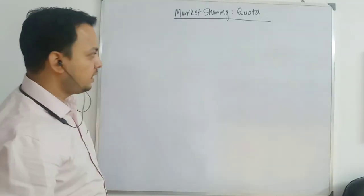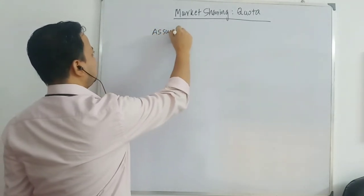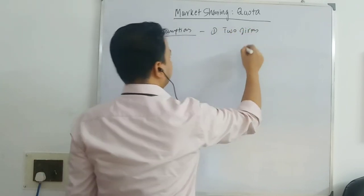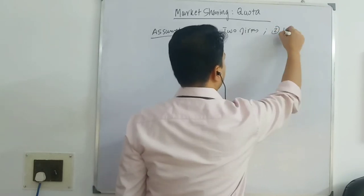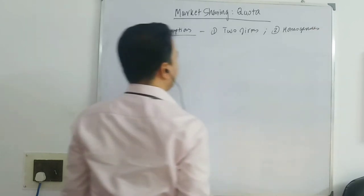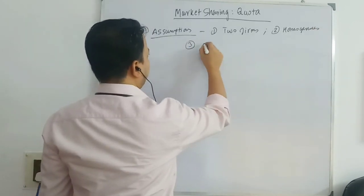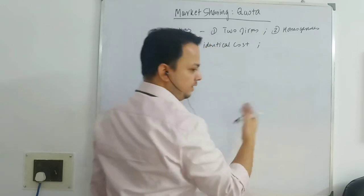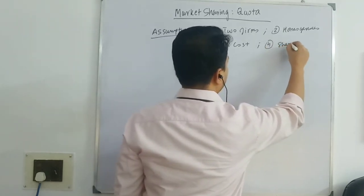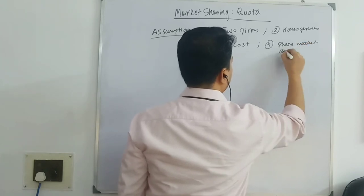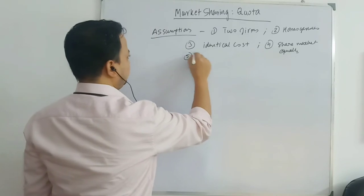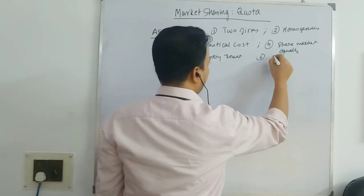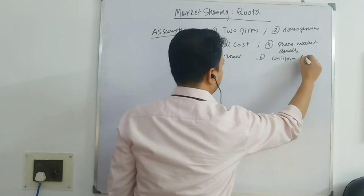When we are considering assumptions, you can write them as follows: two firms selling homogeneous product, they will have identical cost, they will be selling the market equally, no entry is there, and they charge a uniform price.